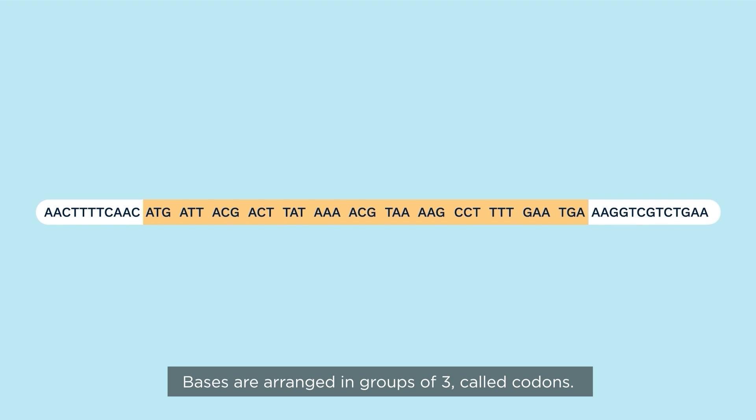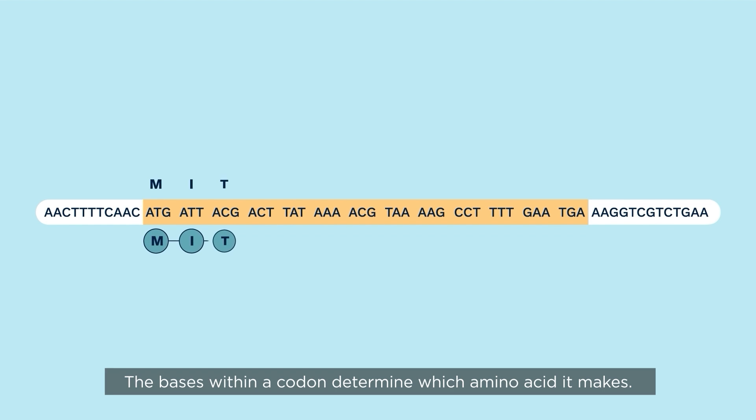Bases are arranged in groups of three, called codons. The bases within a codon determine which amino acid it makes.